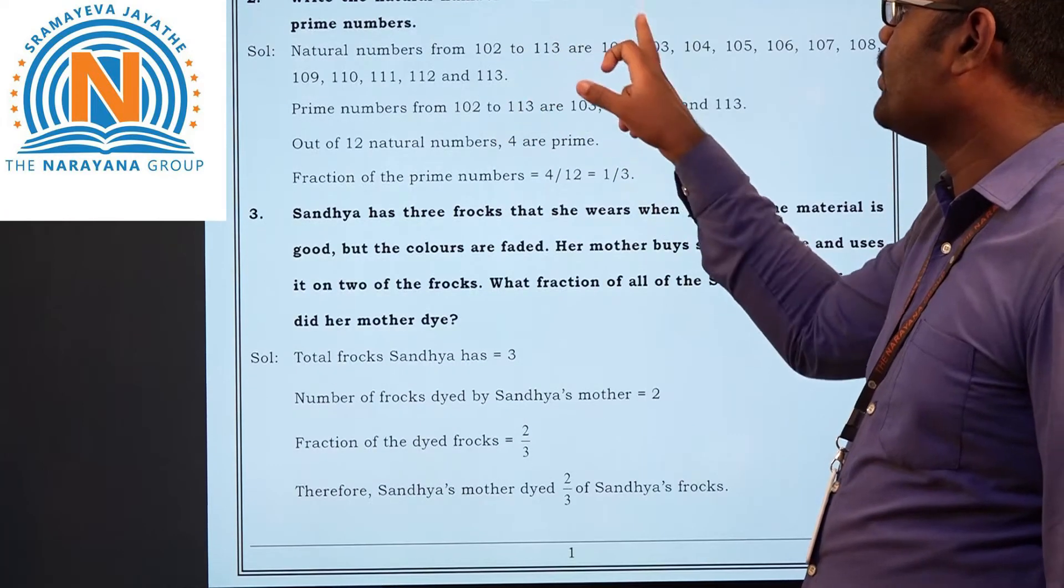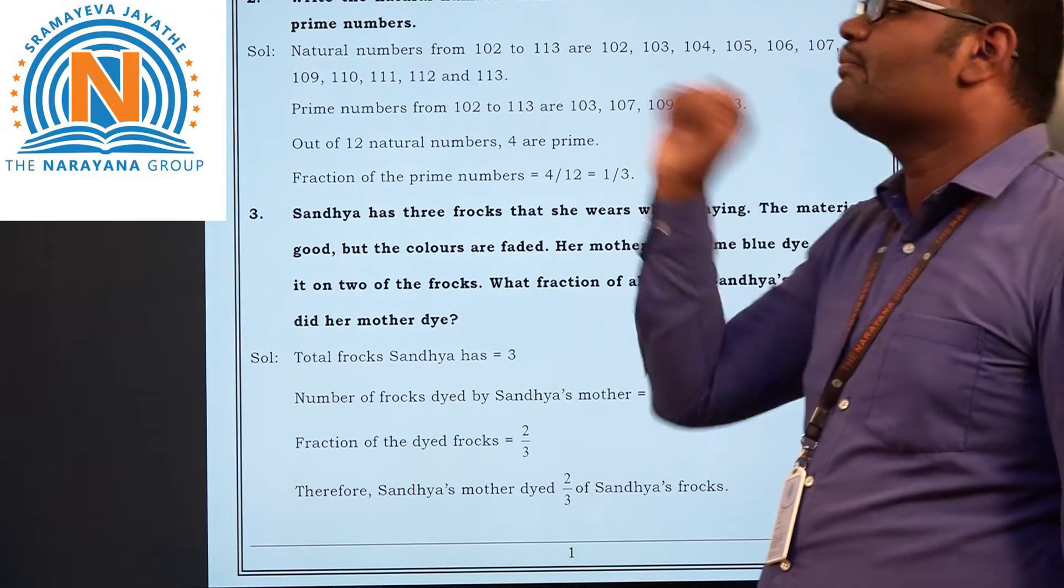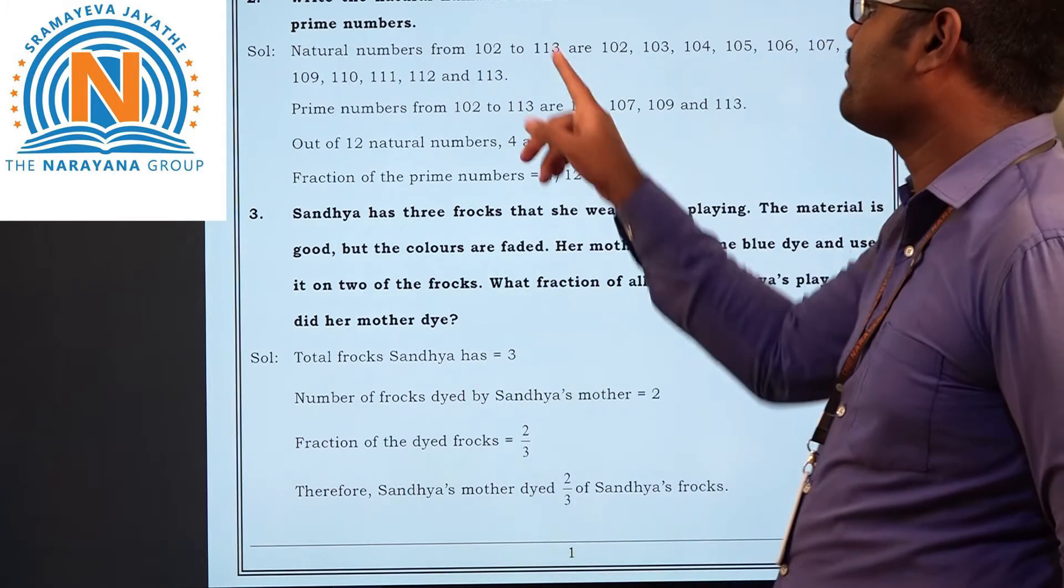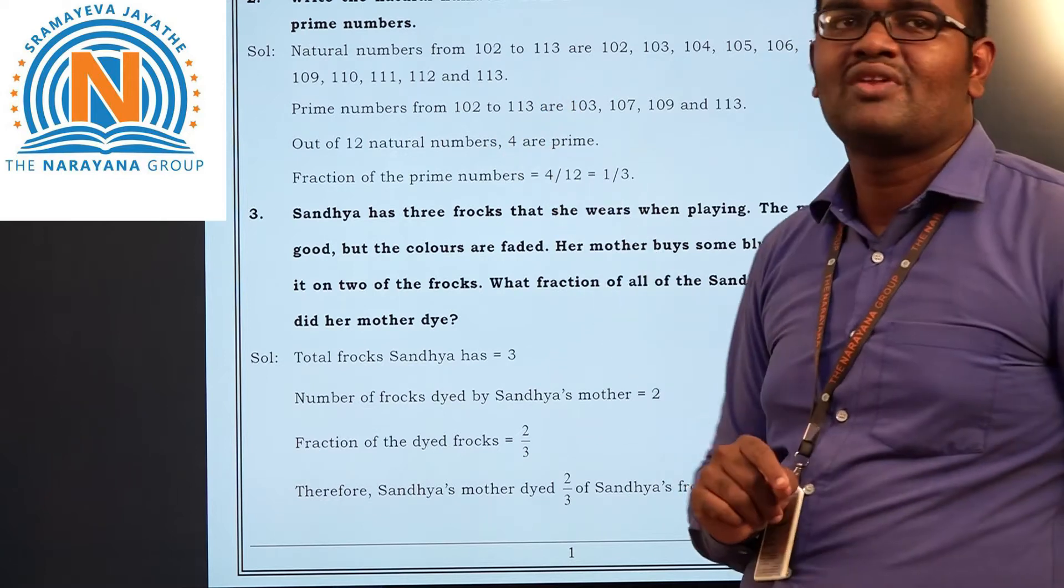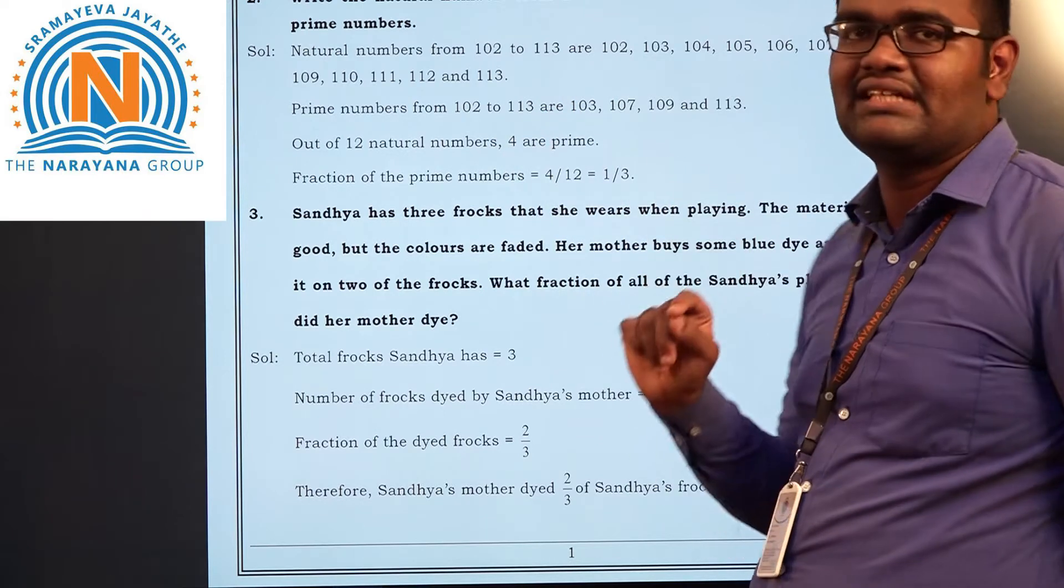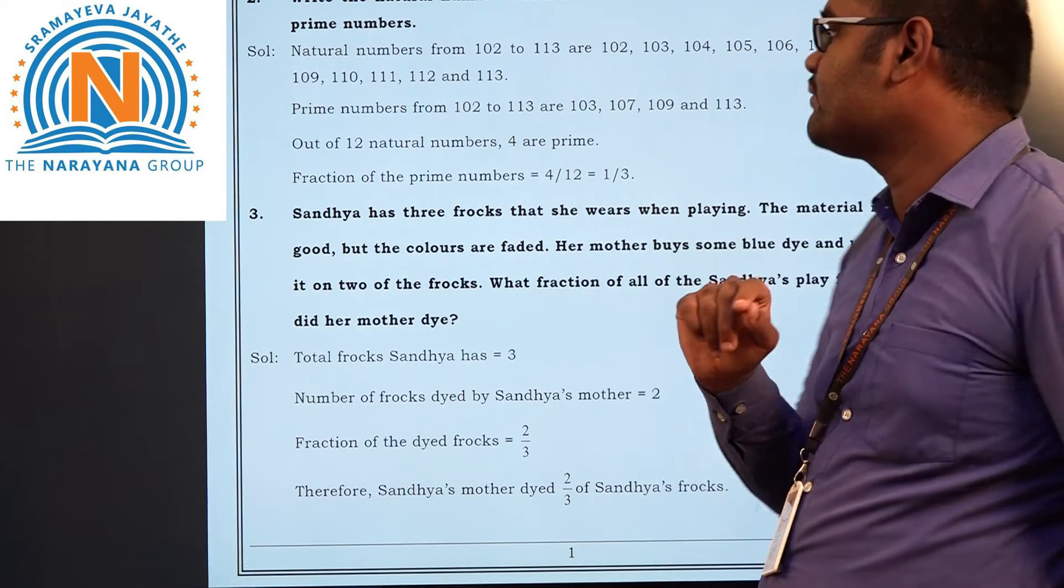Write the natural numbers from 102 to 113. What fraction of them are prime numbers? First you will write from 102 to 113. How many numbers are you getting here? 12 numbers. And in these 12 numbers, what are the prime numbers you have to see?